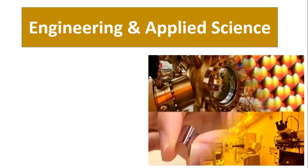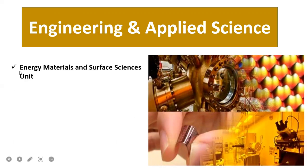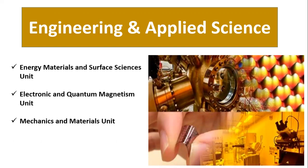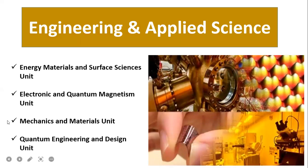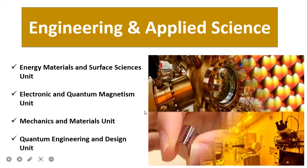If your background is pure engineering, you can also apply to units such as Engineering Material and Surface Science, Electronic and Quantum Magnetism, Mechanics and Materials, and Quantum and Energy Engineering and Design. These are just four examples — there are many more units available. You can also find overlapping units across fields; for example, a unit listed under biology may also appear under chemistry. There are many units a student can apply to.